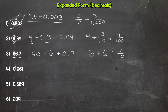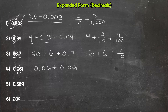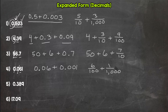Number four: we do not have a whole number and nothing in the tenths, so we start with the six which is worth six hundredths. Then we have a one in the thousandths place. Decimal form: six hundredths plus one thousandth. Fraction form: six hundredths plus one thousandth. Done.